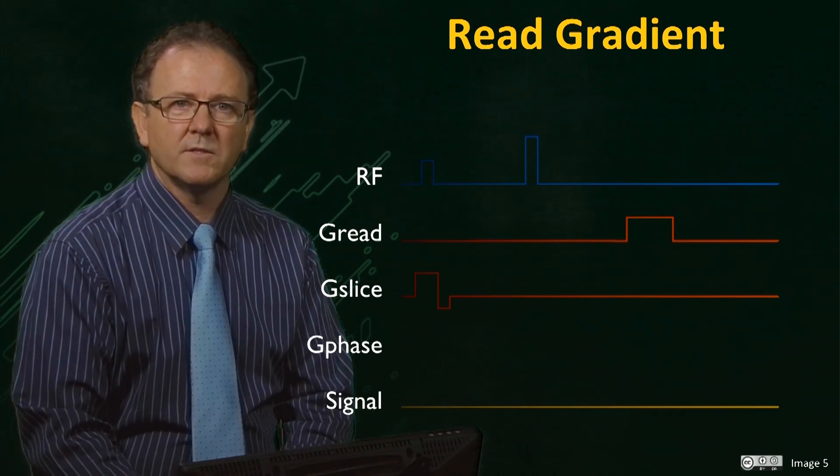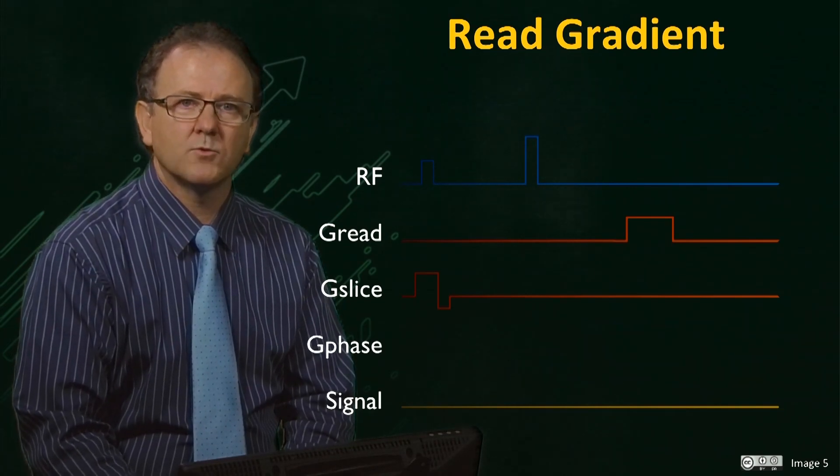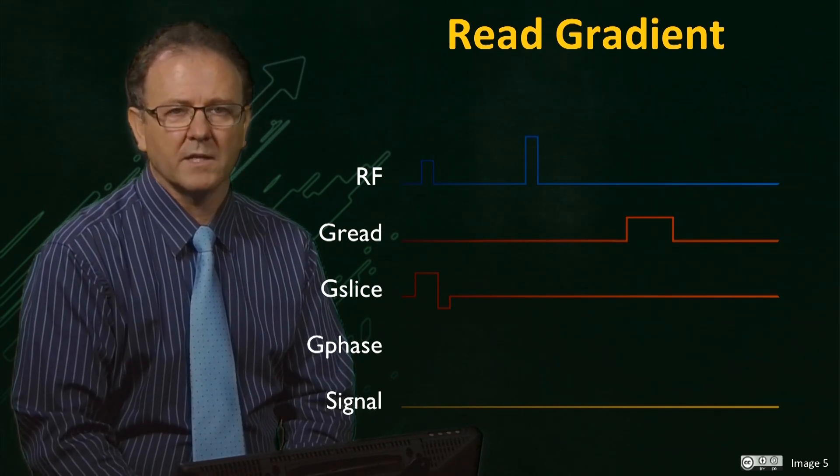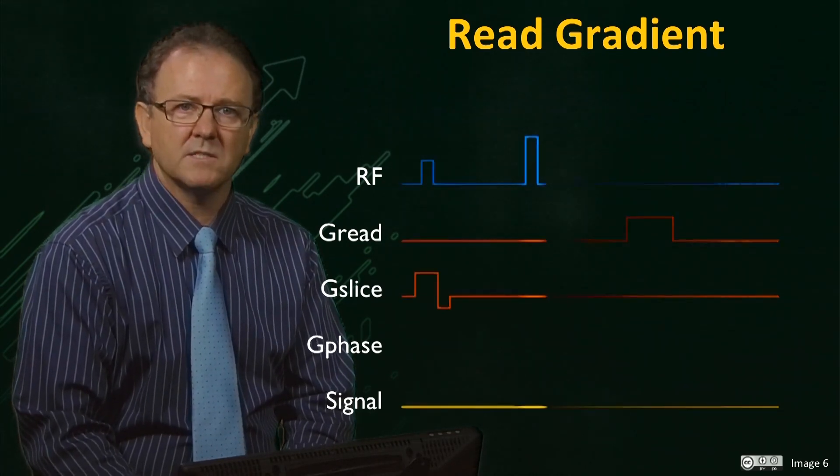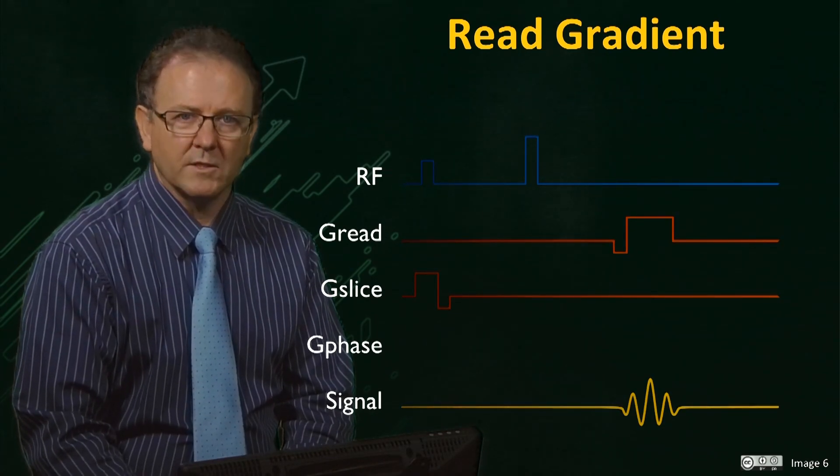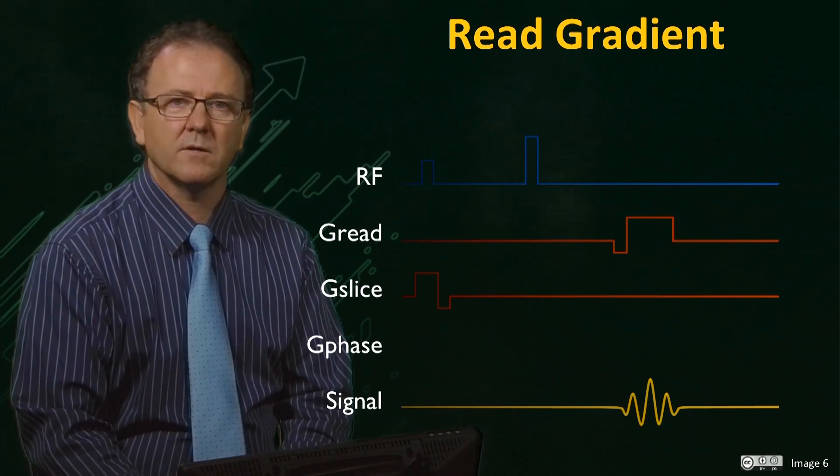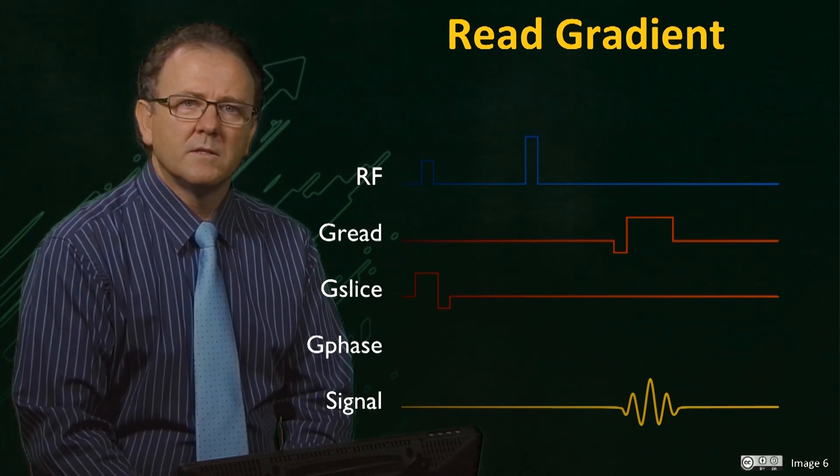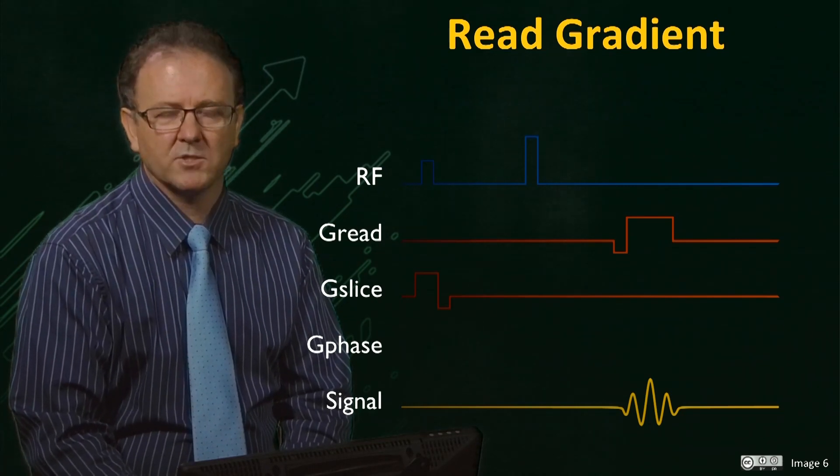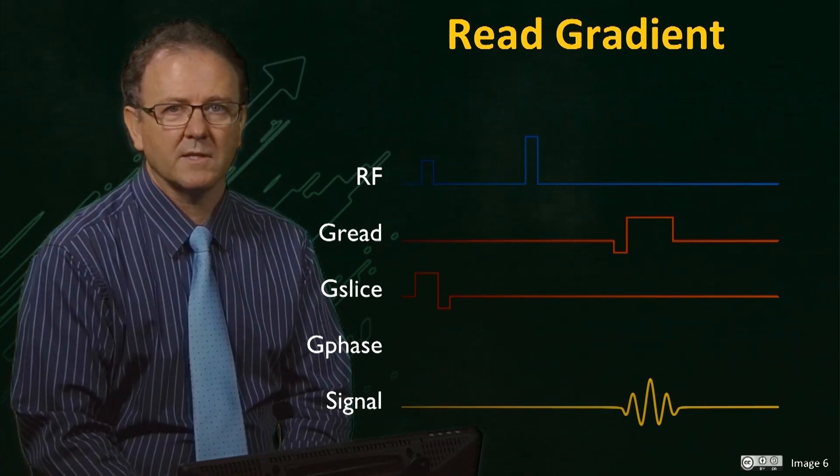So again, it is necessary to compensate for this dephasing. One way to do this is to apply an equivalent gradient in the opposite direction, or of negative sign, to dephase the spins immediately prior to the read gradient, which, when turned on, will then rephase the magnetisation, forming an echo. Since this echo is acquired in the presence of the read gradient, the signal is spatially encoded, and Fourier transforms to produce a projection, as we saw earlier.